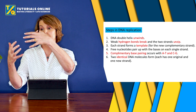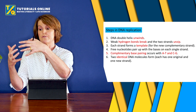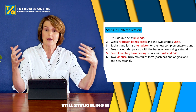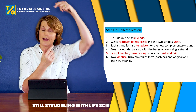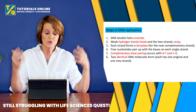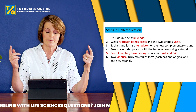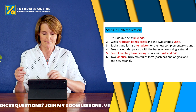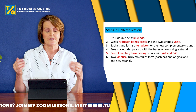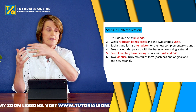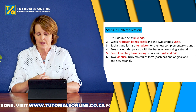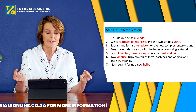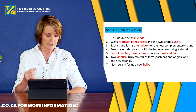Now, with complementary base pairing complete, you have a strand on each side. At step six, two identical DNA molecules are formed, and each one has one original strand and one new strand. Then at step seven, each strand winds up and forms a new double helix.